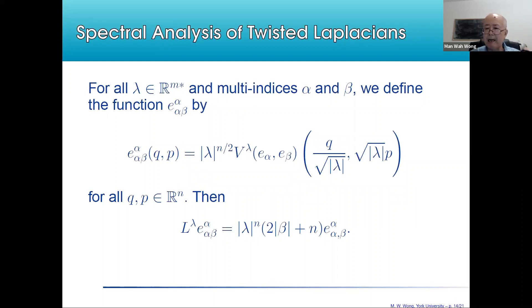In order to study these twisted Laplacians, we need Hermite functions. We have to modify the Hermite functions a little bit. We define for each pair of multi-indices alpha and beta, E_{alpha, beta, lambda} at (Q, P) as the length of lambda to the power n/2 times the lambda Fourier-Wigner transform of the ordinary Hermite functions evaluated at suitable scales of Q and P.